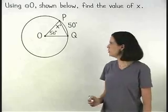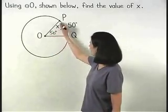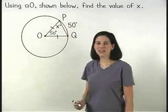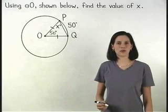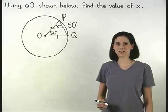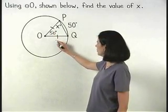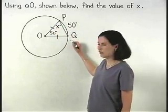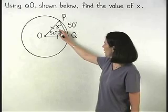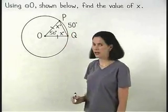Next, notice that sides OP and OQ of triangle OPQ are congruent because each represents a radius of circle O and all radii of a given circle are congruent. And remember that if two sides of a triangle are congruent, then the angles opposite those sides are congruent. So if angle P measures x degrees, then we know that angle Q must also measure x degrees.